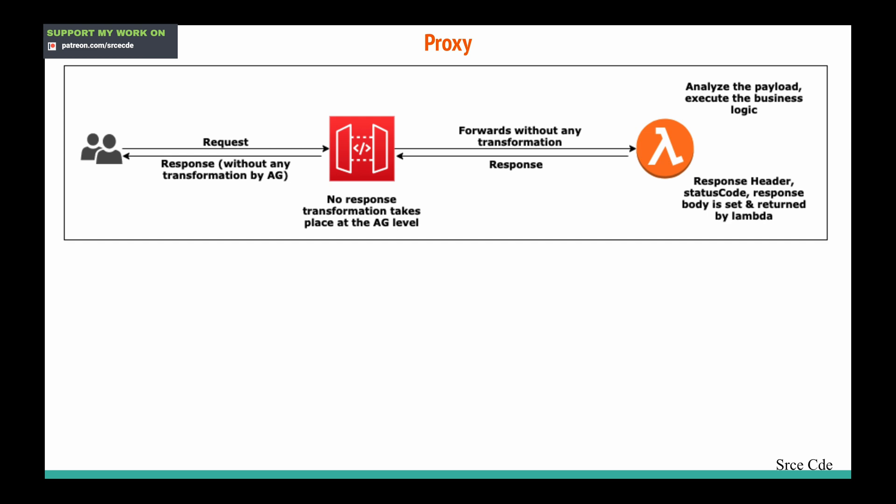The Lambda function will analyze the payload, fetch the required data from the overall request, execute the business logic, and once done it will set the response header, status code, and response body. Once that is set, it returns the response to API Gateway. Again, API Gateway will not play any role in setting the status code, response header, or response body — no transformation takes place at the API Gateway level in terms of response. API Gateway will simply return that data to the end user without any transformation.